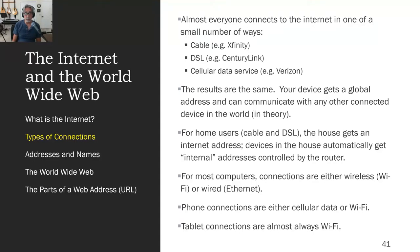For home users, your house is the thing that gets a single Internet address. Inside the house, all the things connected on Wi-Fi or directly by cable to the modems get internal addresses that the router knows about. The router is literally a router — messages come back to the house, and in the message is the directed destination in the house. The router's job is to translate that to the address known inside the house.